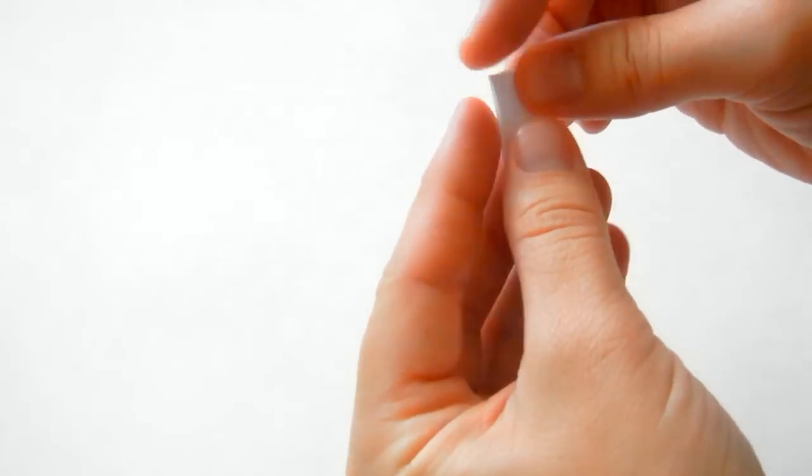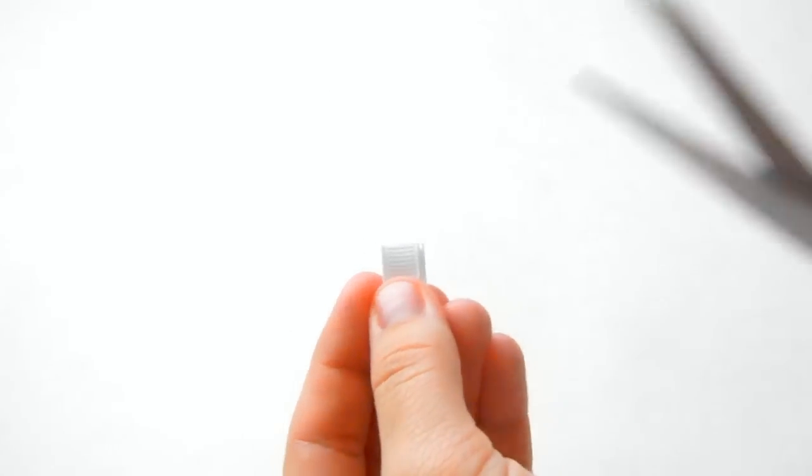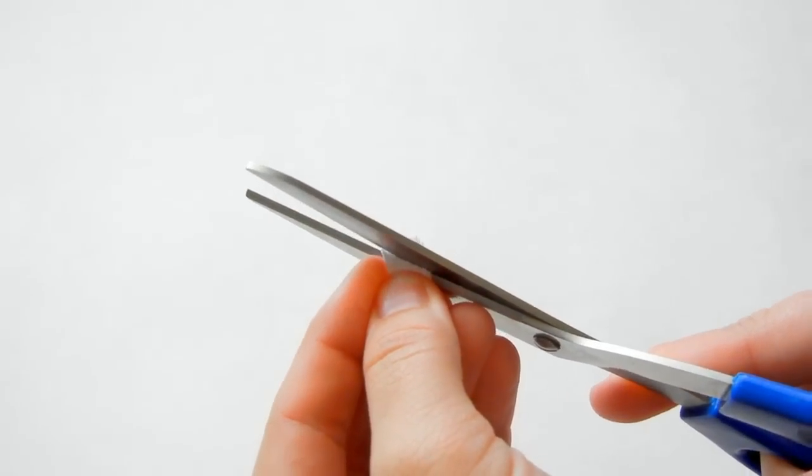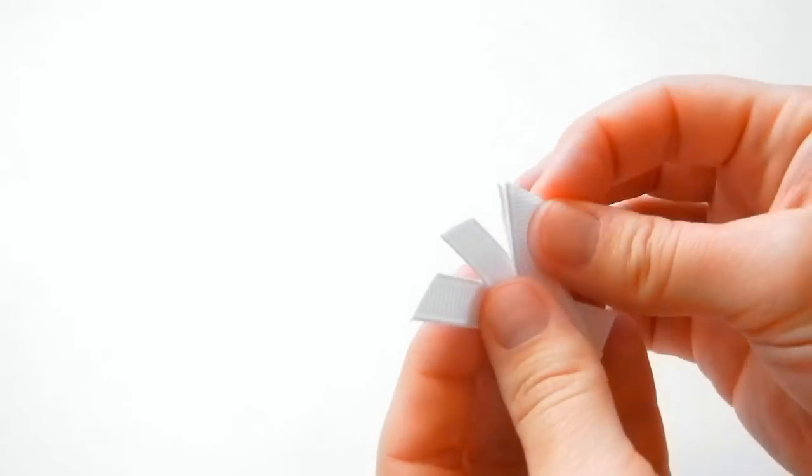And then we're going to take the scissors and cut them at an angle. Once you cut them, we're going to have to seal all those ends.